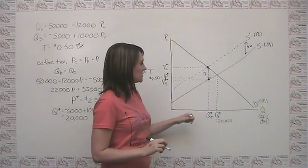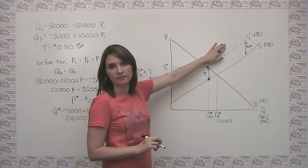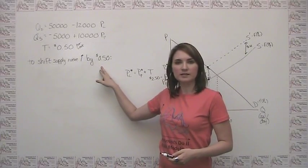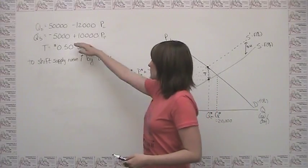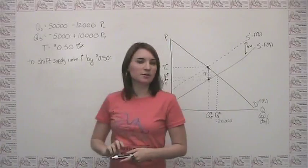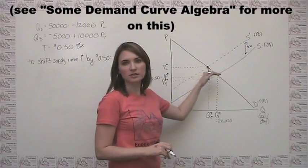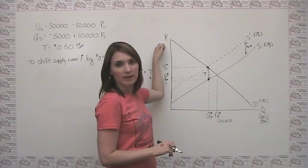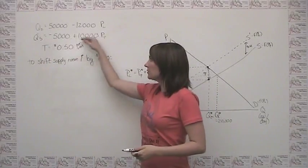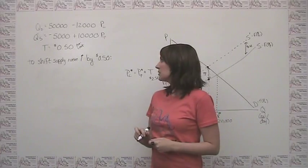Now to find the rest of the quantities, we need to figure out algebraically how to shift the supply curve. What we want to do is shift the supply curve vertically by $0.50. Note that this is not the same as just adding $0.50 to the equation directly, because that would actually shift it horizontally by 0.5, which is not what we're trying to do. We need a shift along the price axis, and there are two ways to do this.